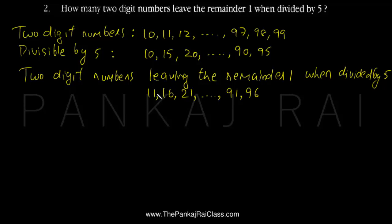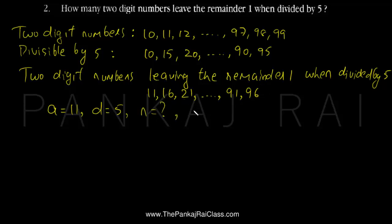So this is the series which we are interested in and we have to count how many two-digit numbers these are — from 11 to 96. As we can see, this is actually forming an arithmetic progression. This is an AP with a, the first term, as 11 and d, the common difference, as 5. We have to find n, the number of terms, where the nth term, the last term, is t_n = 96.